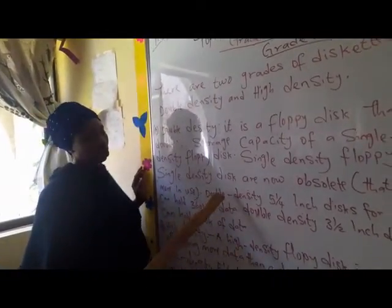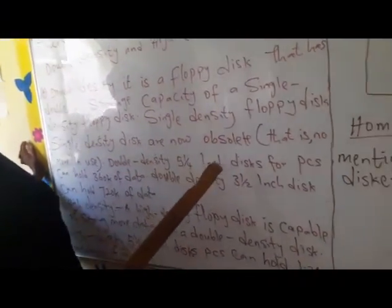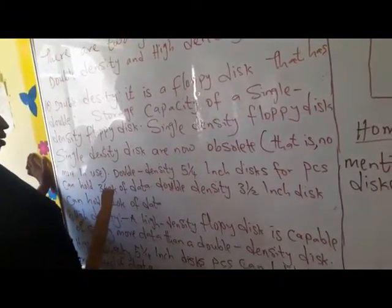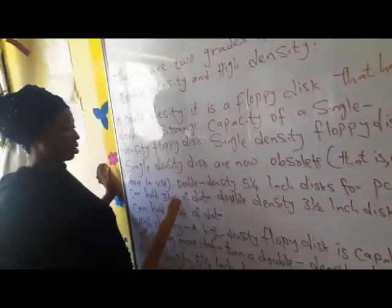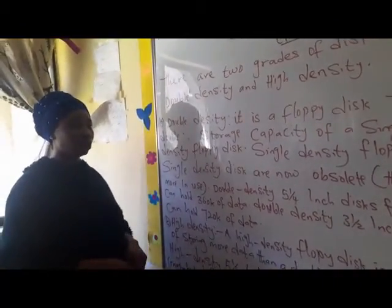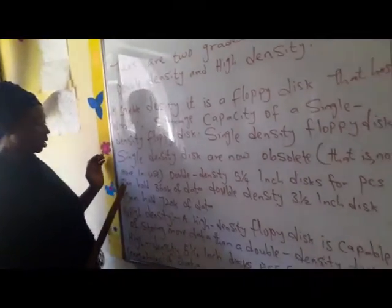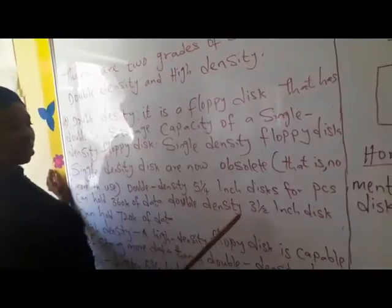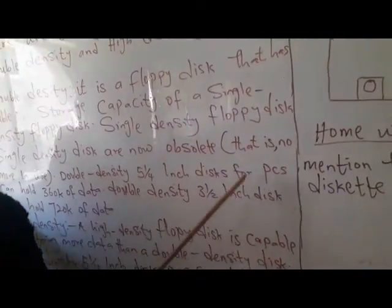It's no more in use because it's not in market. That is what they mean. Double density, 5.5 inch disk for PCs can hold 360K, that is kilobytes of data. When you know the meaning of data, your information. So that is what they mean.